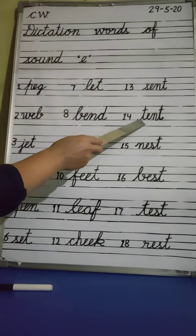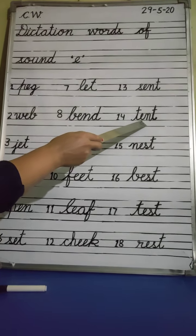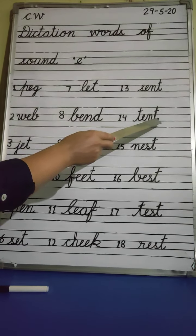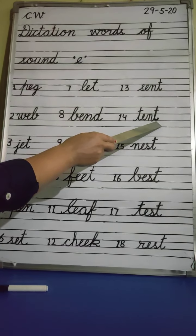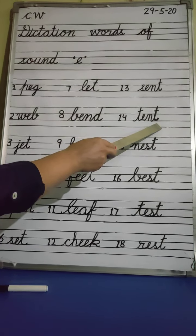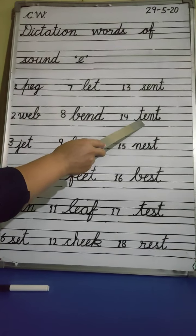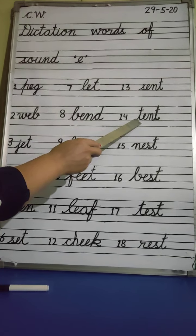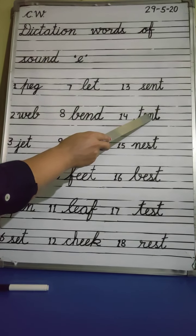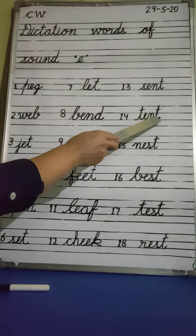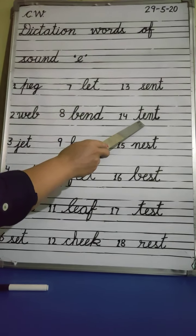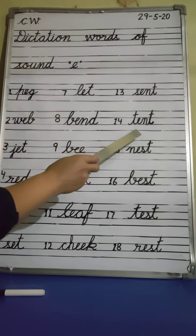Number 14. T, E, N, T — Tent. What is this? T, E, N, T — Tent. Okay.